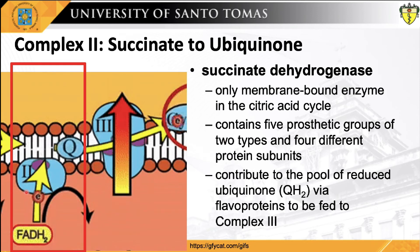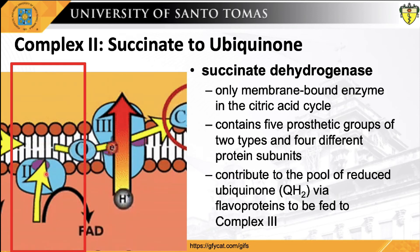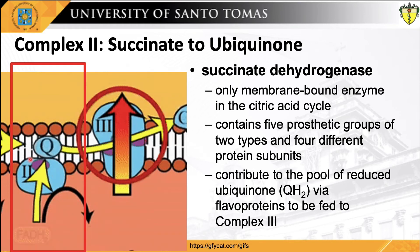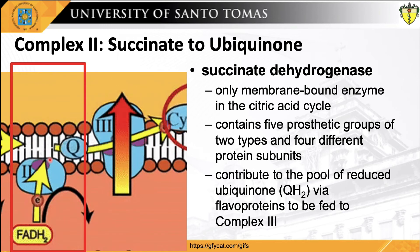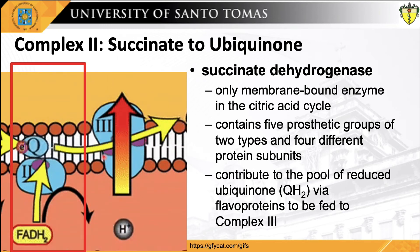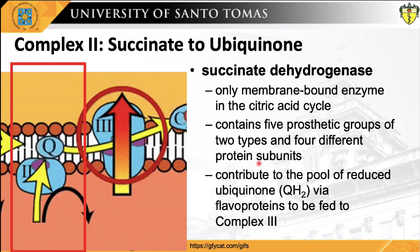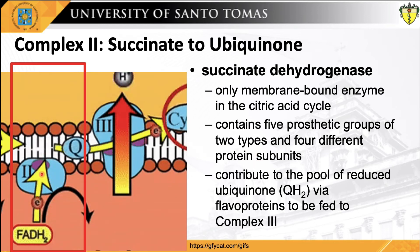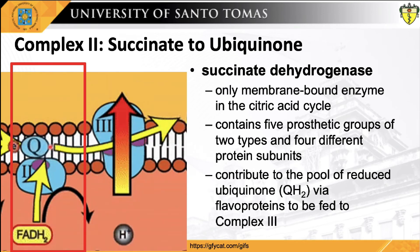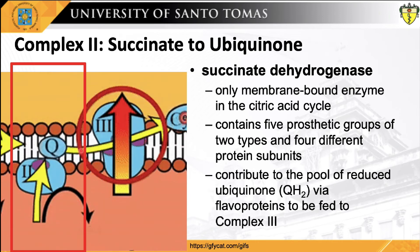Complex II, also known as succinate dehydrogenase, is the only membrane-bound enzyme in the citric acid cycle. Although smaller and simpler than Complex I, it contains five prosthetic groups of two types and four different protein subunits. Each of these electron-transferring enzymes contributes to the pool of reduced ubiquinone — ubiquinol (QH2) — from all these reactions.